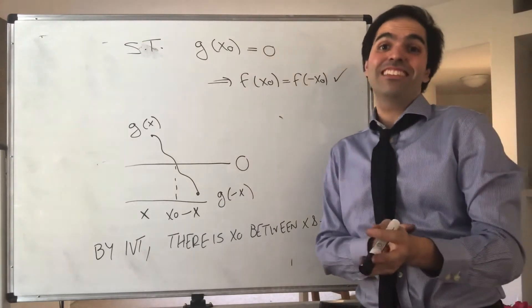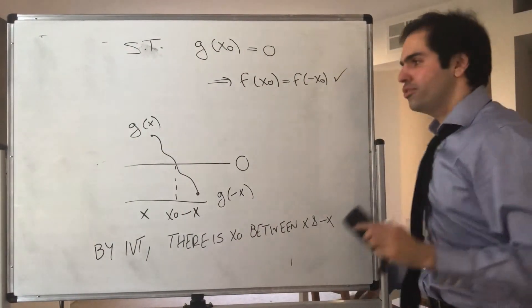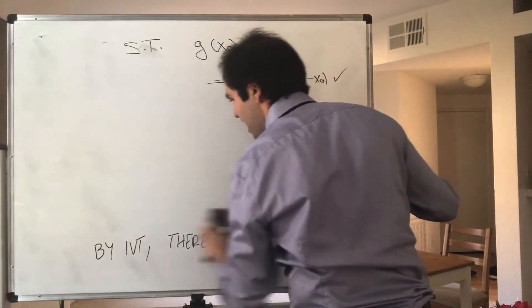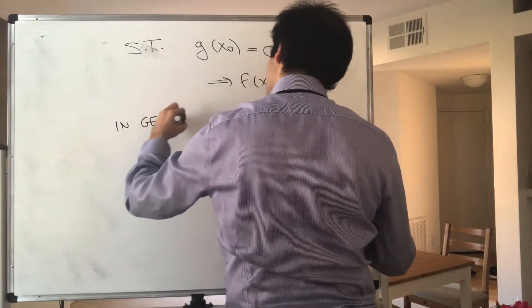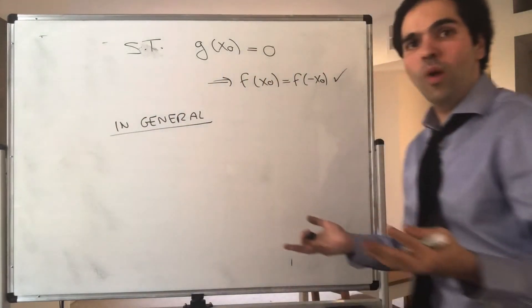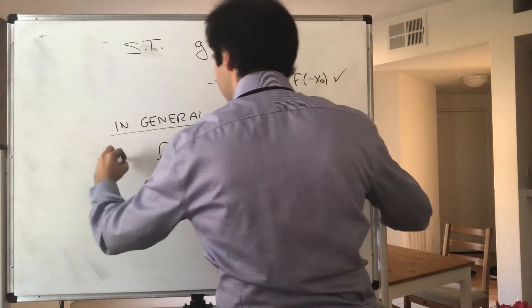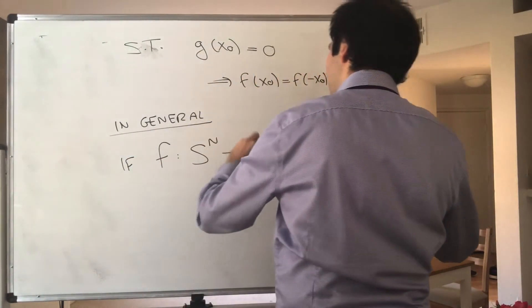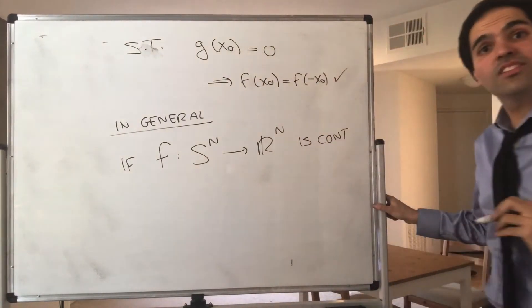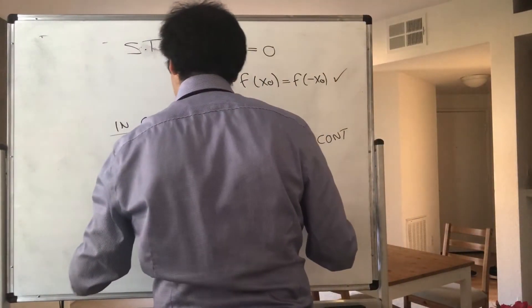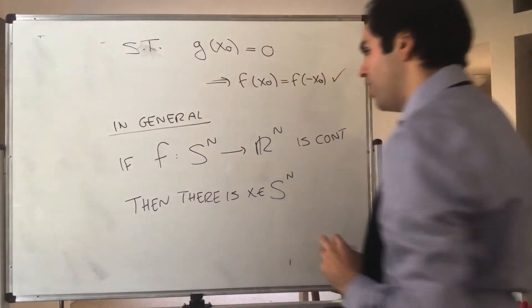However, stuff gets even more exciting now. Because it turns out, so we've proven this in one dimension, it turns out this is also true in higher dimensions. So in general, we have the following. Because here we had S¹, which was the circle in R². Well, in general, if you take the n-dimensional sphere, so Sⁿ to Rⁿ, if this is continuous, then there is x, some point on that sphere.